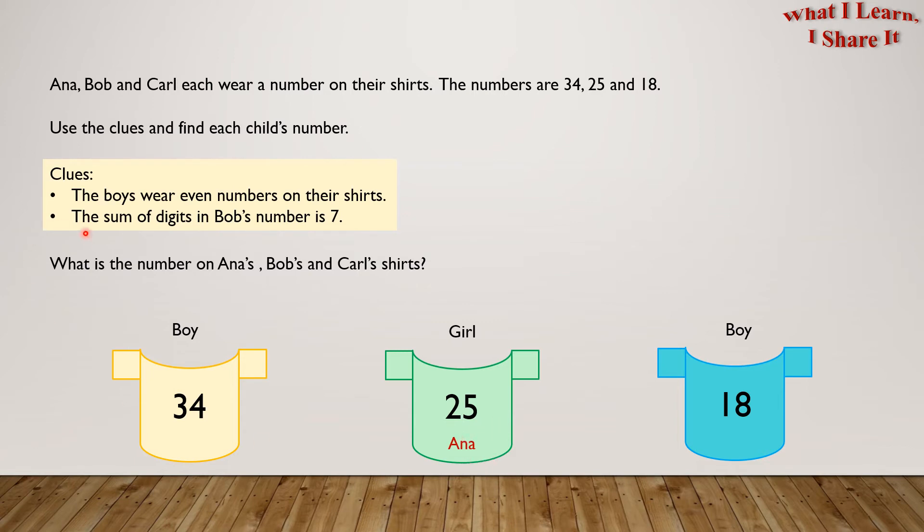The sum of the digits in Bob's number is 7. For shirt number 34, the sum of the digits is 3 plus 4 equals 7. And in shirt number 18, the sum of the digits is 1 plus 8 equals 9.